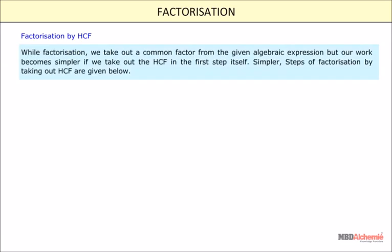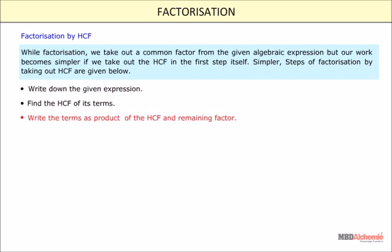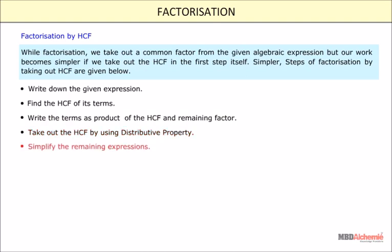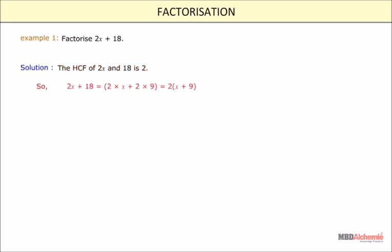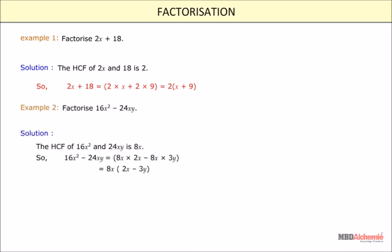Factorization by HCF. While factorizing, we take out a common factor from the given algebraic expression, but our work becomes simpler if we take out the HCF in the first step itself. The steps are: write down the given expression, find the HCF of its terms, write the terms as the product of the HCF and remaining factor, take out the HCF using the distributive property, and simplify the remaining expressions. For example, factorize 2x plus 18. The HCF of 2x and 18 is 2, so 2x plus 18 equals 2 into x plus 9. Remember, if we do not use the HCF method, then the number of steps increases.